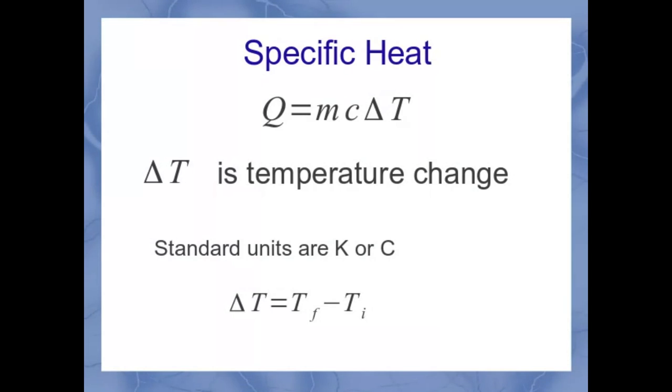Delta T is the temperature change. For any temperature change, that's going to be the final temperature minus the initial temperature. Now you can use Kelvin or Celsius for this because a temperature change in either one of those temperature scales is actually equivalent to one another. But you cannot use Fahrenheit in this equation.